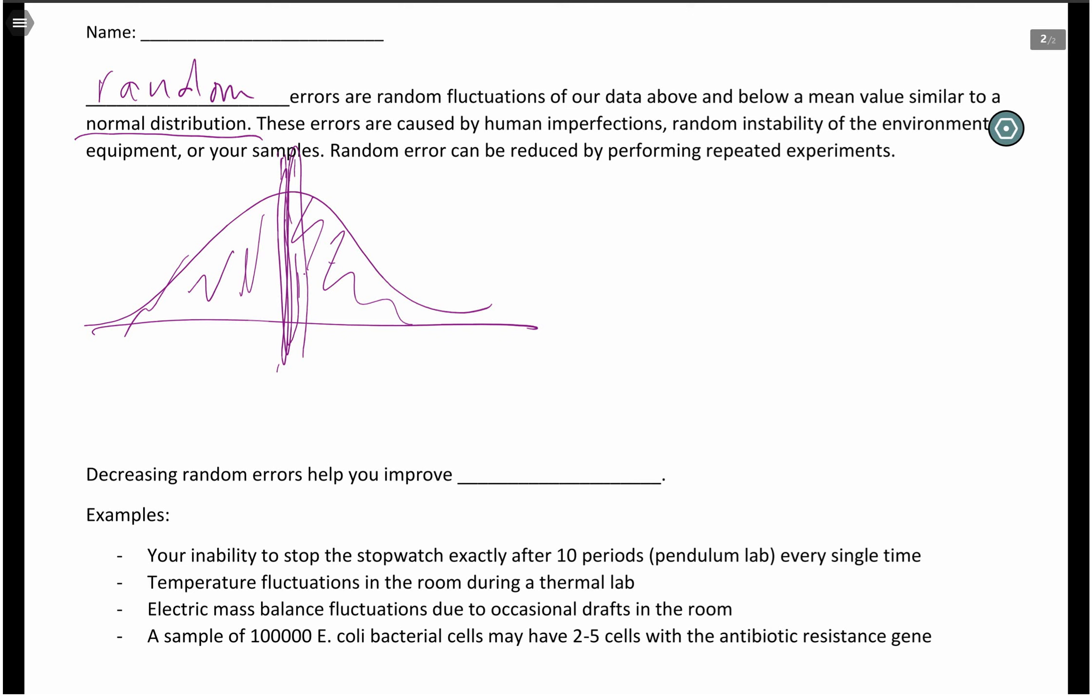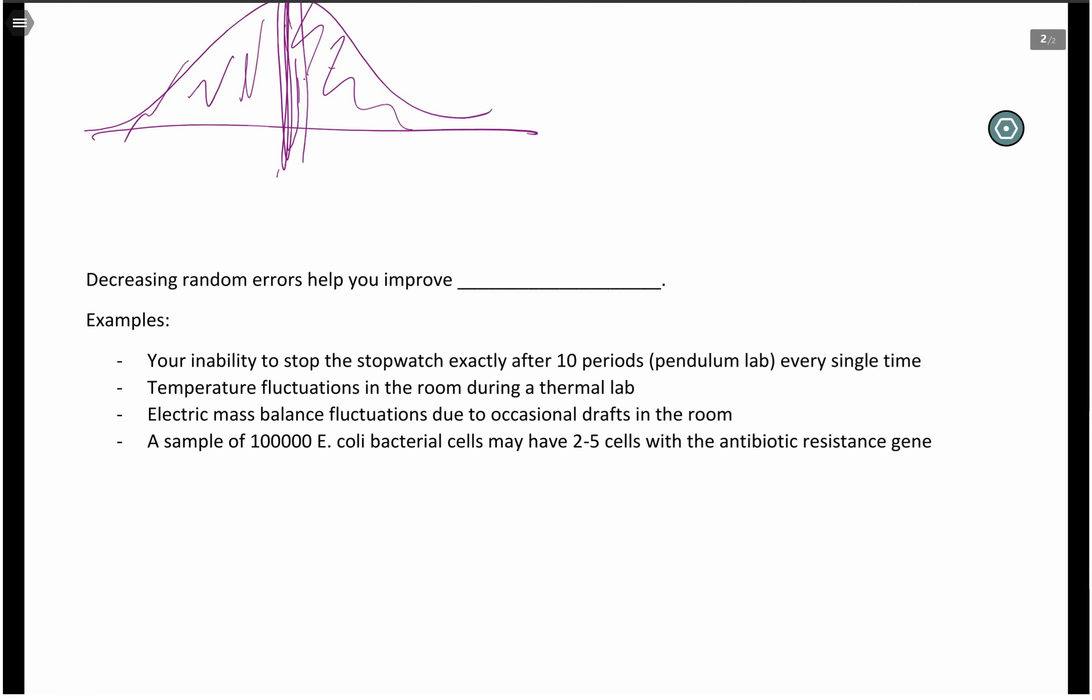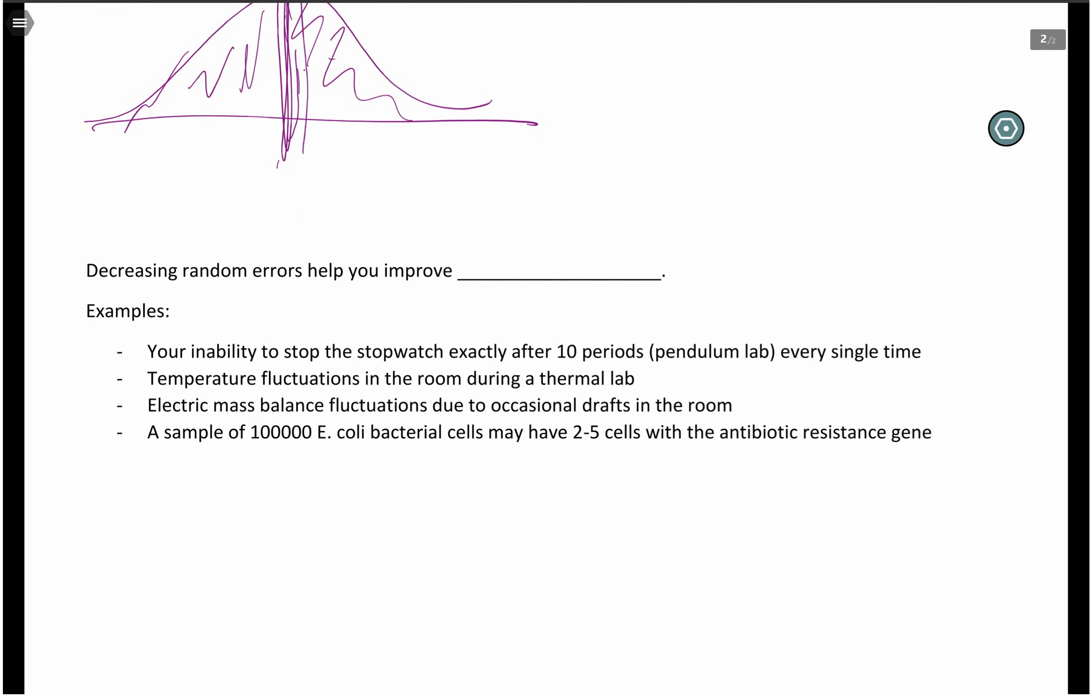The random error can be reduced by repeating your experiments. And this is what we talked about in our lab when you did four repetitions for every single piece of data. And to make it even better, you timed it for 10 oscillations instead of just for the one. Decreasing random error helps you improve precision.